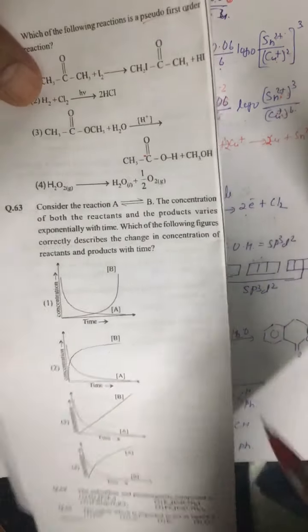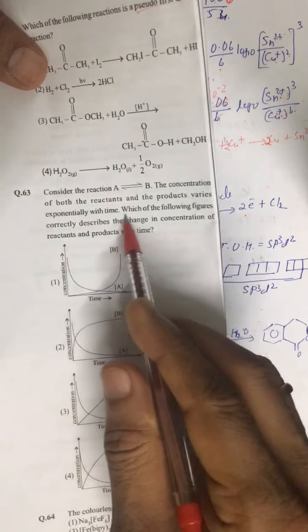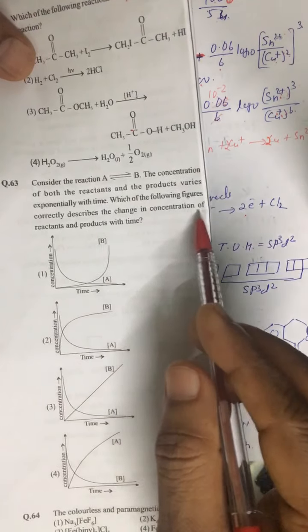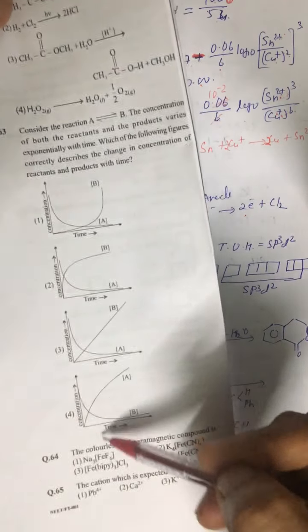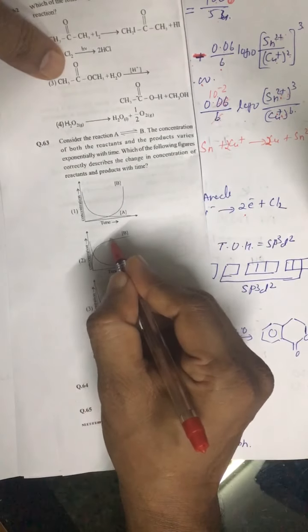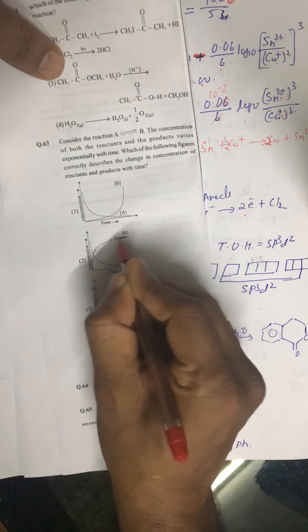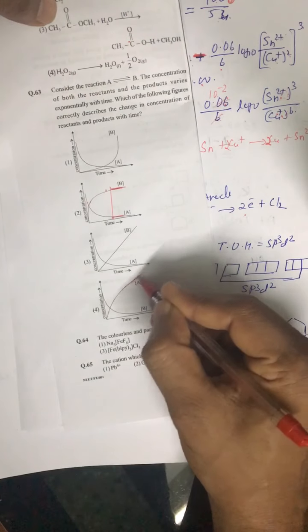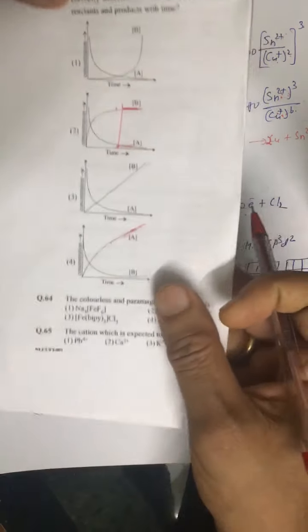Question number 63: a reaction A ⇌ B is given, and we need the graph that correctly describes the change in concentration of reactant and product with time. Since this is an equilibrium reaction, after some time the concentrations of both reactant and product must become constant. The correct option is the second one, where both concentrations level off to constant values.